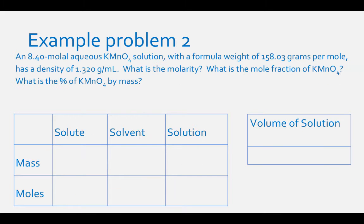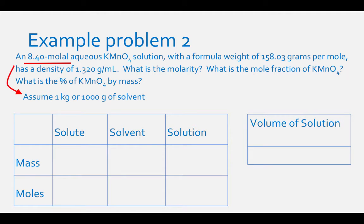The next example: an 8.40 molal aqueous KMnO₄ solution with a formula weight of 158.03 g/mol has a density of 1.320 g/mL. What is the molarity, the mole fraction of KMnO₄, and the percent KMnO₄ by mass? Since we have an 8.40 molal solution, assume 1.0 kg (1,000 g) of solvent and 8.40 moles of solute.